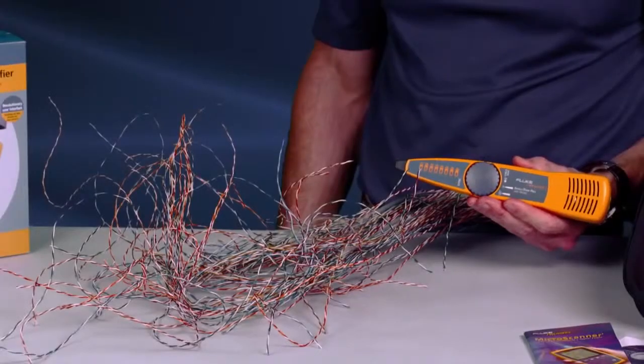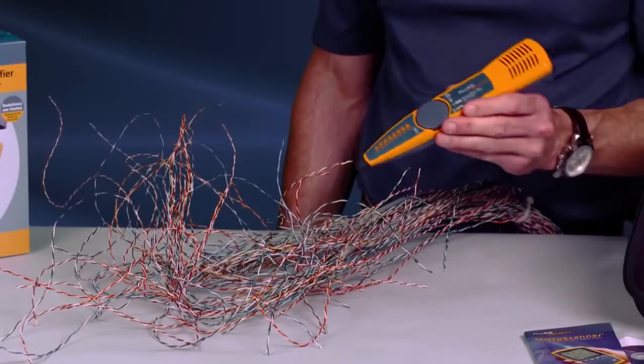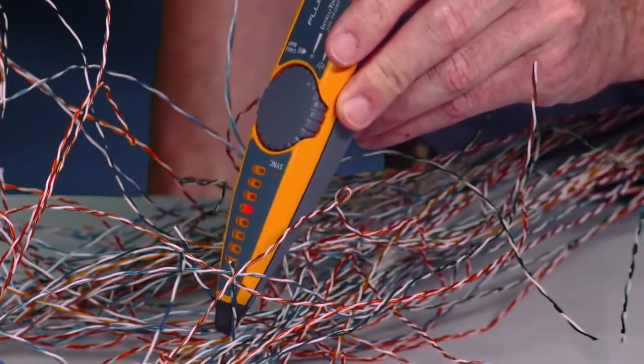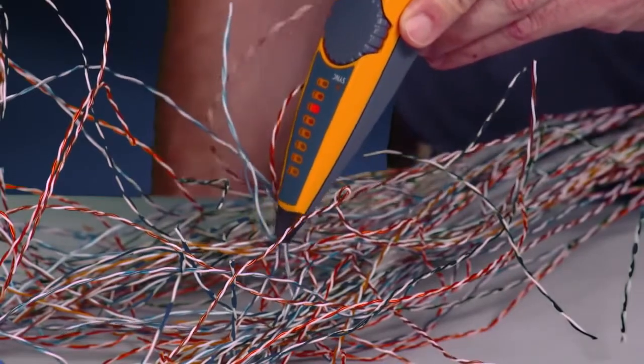Use the IntelliTone Pro to quickly locate cables and locate individual pairs with a smart tone analog function. We've connected the toner to a random pair in our rat's nest of cabling. It's no problem for the IntelliTone Pro from Fluke Networks. The IntelliTone Pro finds the right wires every time.